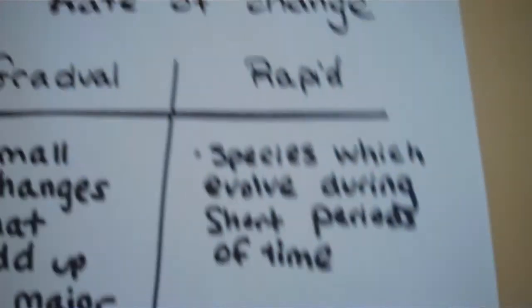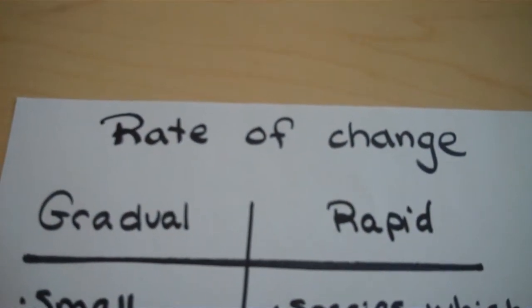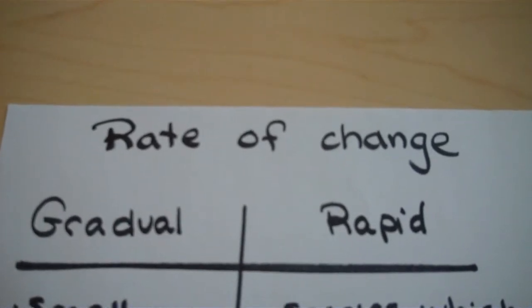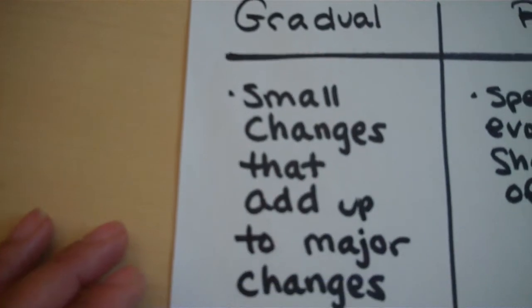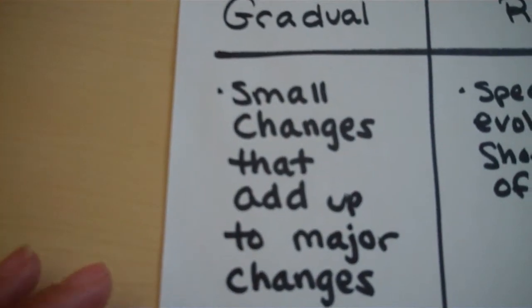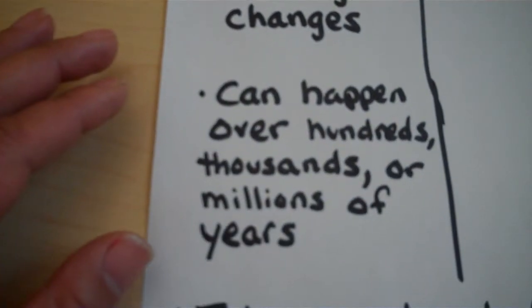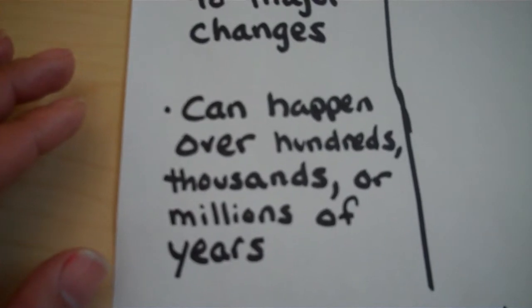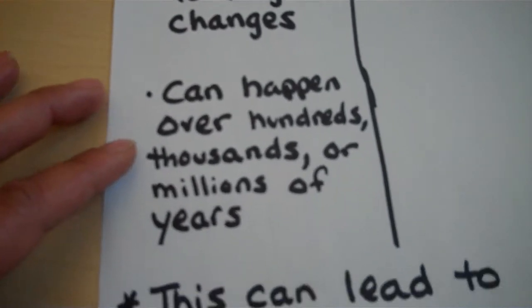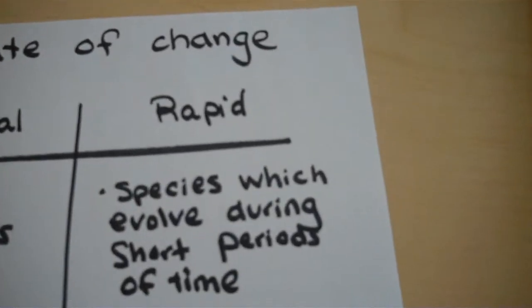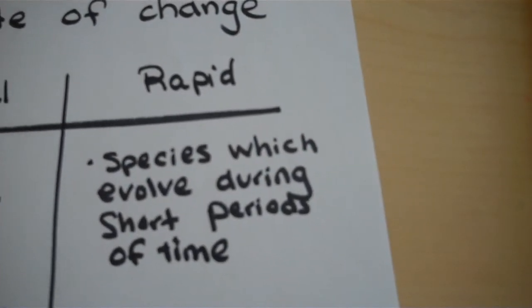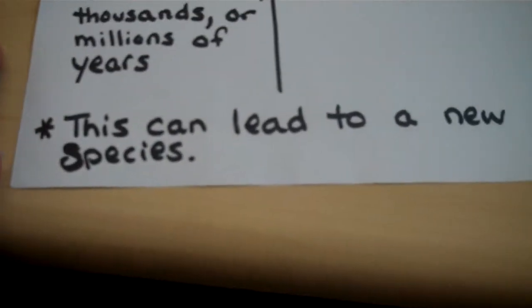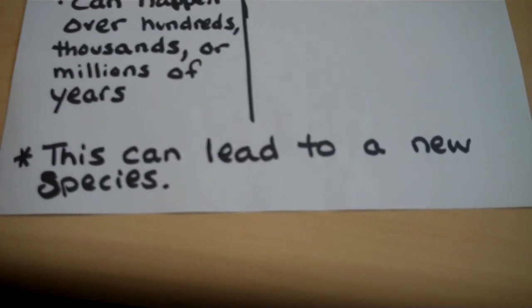The last thing I'd like to share is about the rate of change. In evolution, we have two rates mentioned in our textbook: gradual and rapid. Gradual means small changes that add up to major changes, and it can happen over hundreds, thousands, or millions of years. Rapid is when species can evolve during short periods of time. With both of these, this can lead to a new type of species.